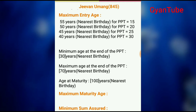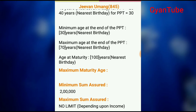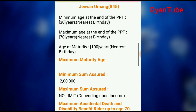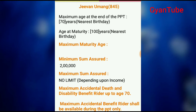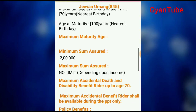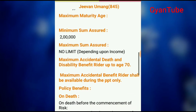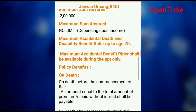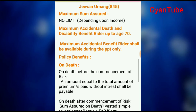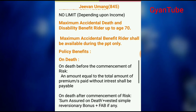If your age is 20 or 25, you can select the suitable term. Minimum age at the end of PPT is 30 years nearest birthday. Maximum age at the end of the premium paying term is 17 years. Age at maturity is 100 years. Minimum sum assured is Rs. 2,00,000 and maximum sum assured has no limit — it depends on your income.